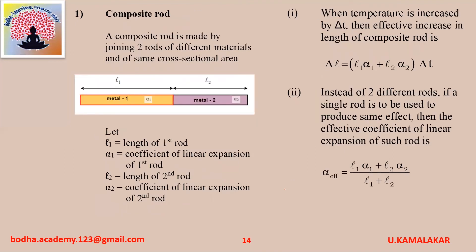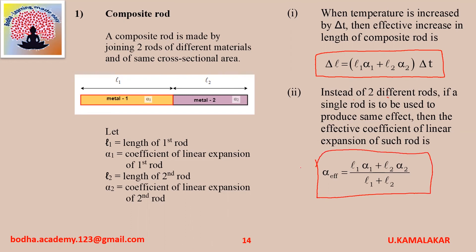Composite rod: a composite rod is made by joining two rods of different materials and of the same cross-sectional area. Let L1 be length and alpha1 be coefficient of linear expansion of the first rod, L2 be length and alpha2 be coefficient of linear expansion of the second rod. When temperature is increased by delta T, the effective increase in length of the composite rod is delta L equals (L1 alpha1 plus L2 alpha2) into delta T. The effective coefficient of linear expansion is alpha_eff equals (L1 alpha1 plus L2 alpha2) divided by (L1 plus L2).